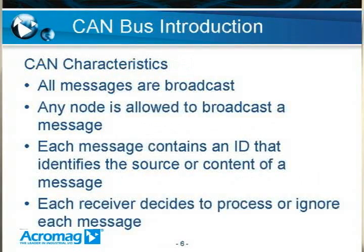The characteristics of CAN are that all messages are broadcast messages, and any node on the bus can broadcast a message at any time. Each message contains an identifier that identifies the source or the content of the message. Each receiver on the bus listens to every message that is sent, and depending on the identifier or content, it decides whether that information is useful and can choose to process or ignore it.